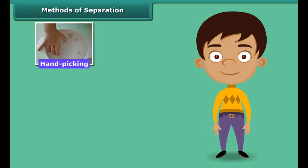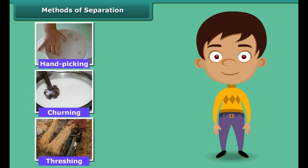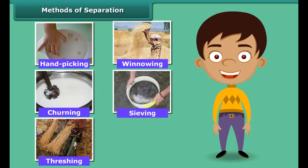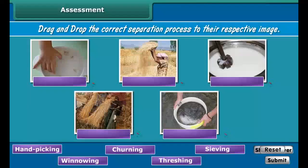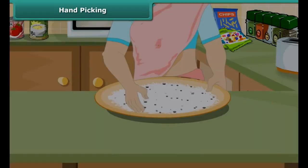Hand picking, churning, threshing, winnowing, sieving. The basis for choosing a method of separation depends upon the physical properties of the components. Now, drag and drop the correct separation process to their respective image. You need to match the separation process with the relevant images of separation.